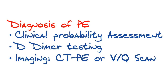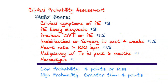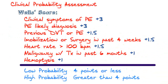The main clinical probability assessment tool we use is called the Wells score, which consists of different criteria and a point system. If you have clinical symptoms of a PE, you get three points. If PE is the likely diagnosis, you get three points.